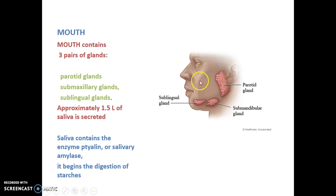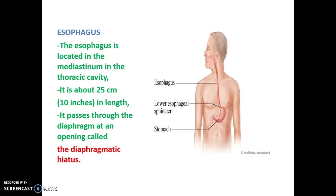In the mouth, we have three pairs of parotid salivary glands that secrete saliva. The saliva mainly contains ptyalin or salivary amylase, which helps for the digestion of starch. Next is the esophagus, which is located in the mediastinum in the thoracic cavity.